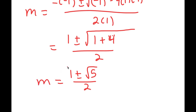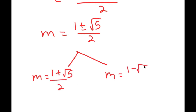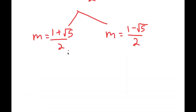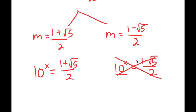So this is the value of m. To be precise, the two values of m are 1 plus the square root of 5 over 2, and 1 minus the square root of 5 over 2. Now, remember how we let m equal 10 to the power of x. So 10 to the power of x is equal to 1 plus the square root of 5 over 2, and also equal to 1 minus the square root of 5 over 2. Well, 1 minus the square root of 5 over 2 is a negative number, and you can't take the power of a positive number and make it equal to a negative, meaning there's no solution to this equation.